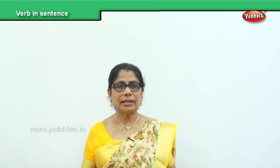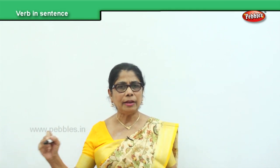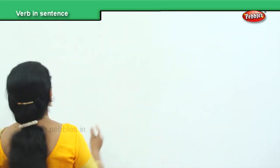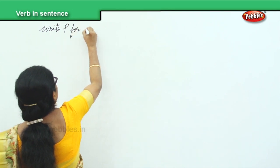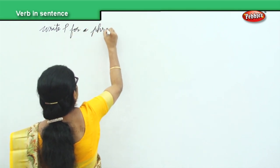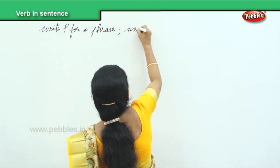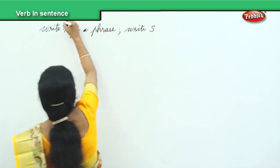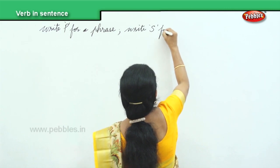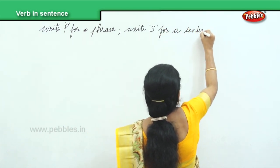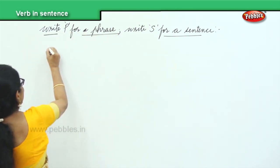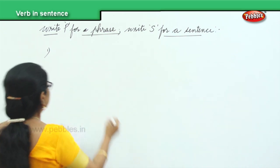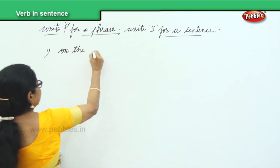We will do a short exercise now to identify a sentence from a phrase. If it is a sentence, you write S. If it is a phrase, you write P. We will be doing this exercise together. The first one we have here is: on the table.